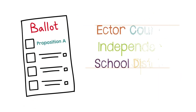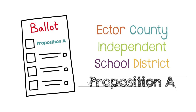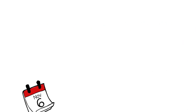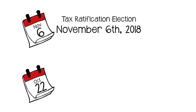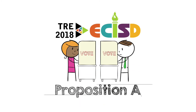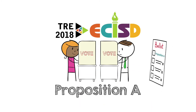This item will appear on the ballot as Ector County Independent School District Proposition A. Election Day is November 6th. Early voting begins on October 22nd. October 9th is the deadline to register to vote in this election. We encourage everyone to get informed and get out and vote.